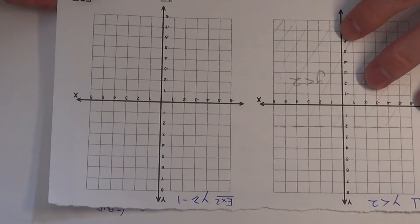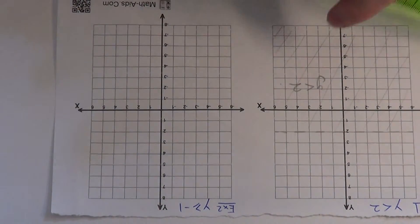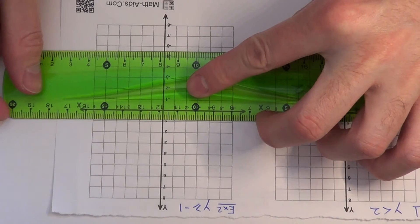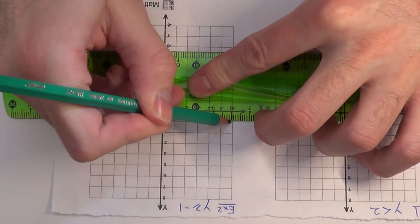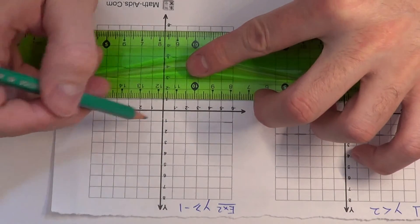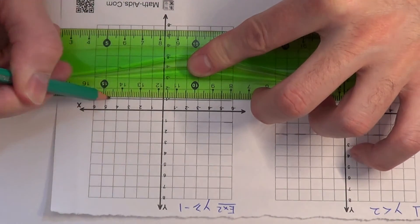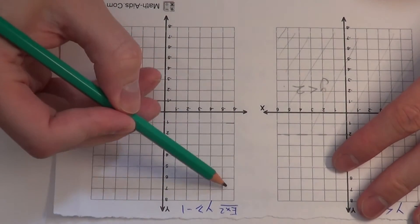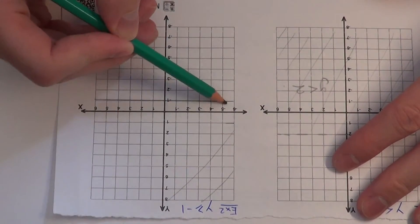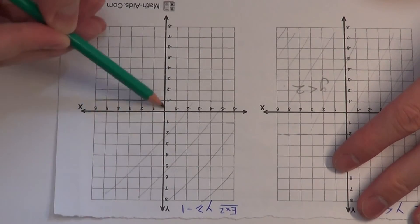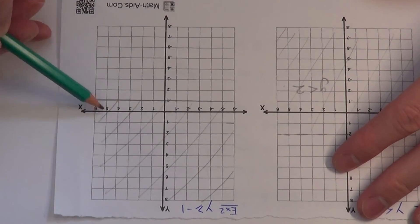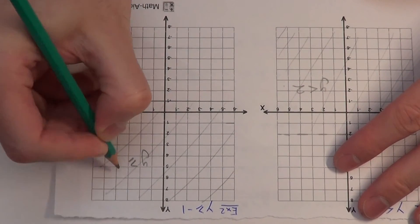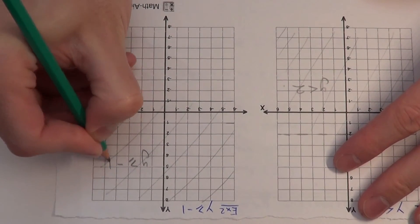On our coordinate grid, we draw a normal line going through the y-axis at minus 1. We then shade above this line, because this is where the y-coordinates are larger than minus 1. We mark the shaded region as y is more than or equal to minus 1.